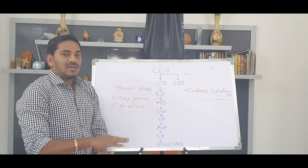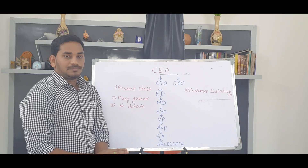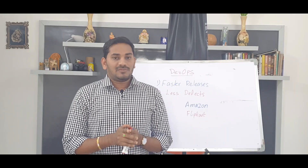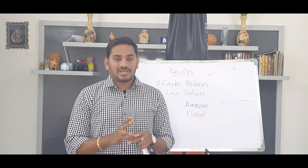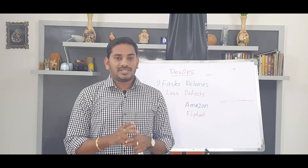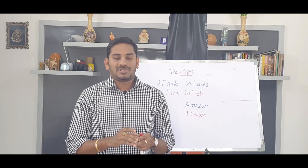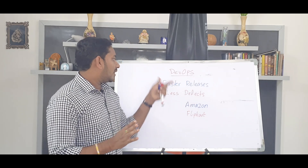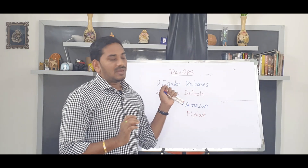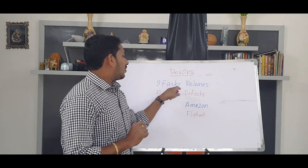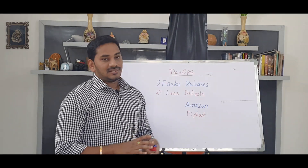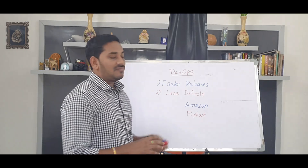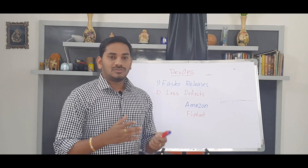So we apply it to DevOps. I've talked about the CEO's goals: product stability, money generation, fewer defects, and customer satisfaction — this is the vision. Our DevOps vision is faster releases, and defects should be almost zero.